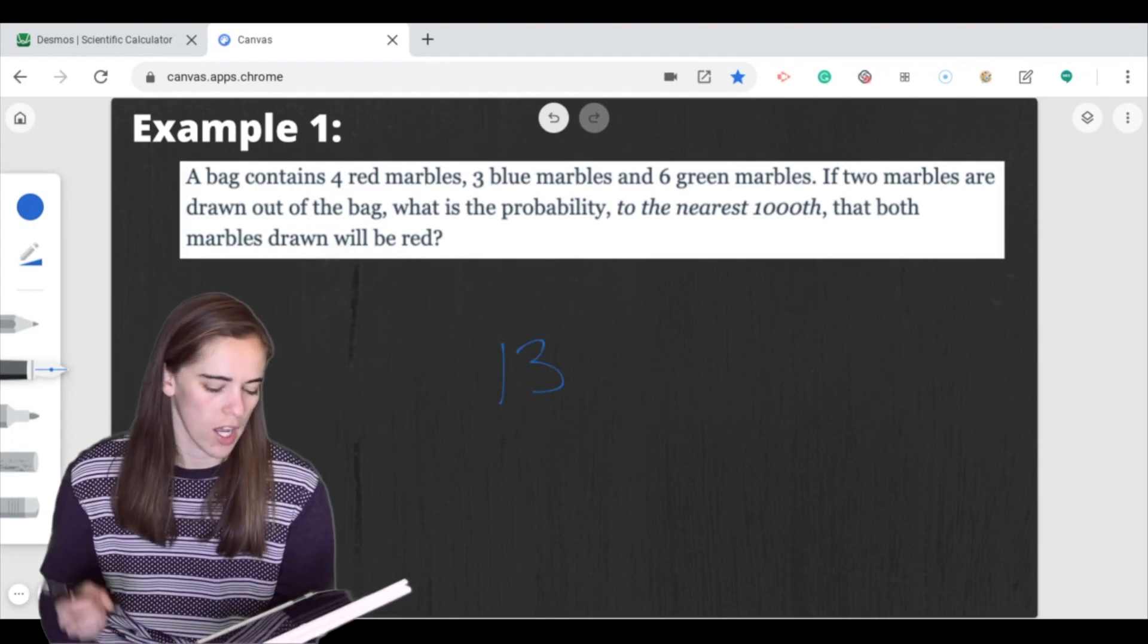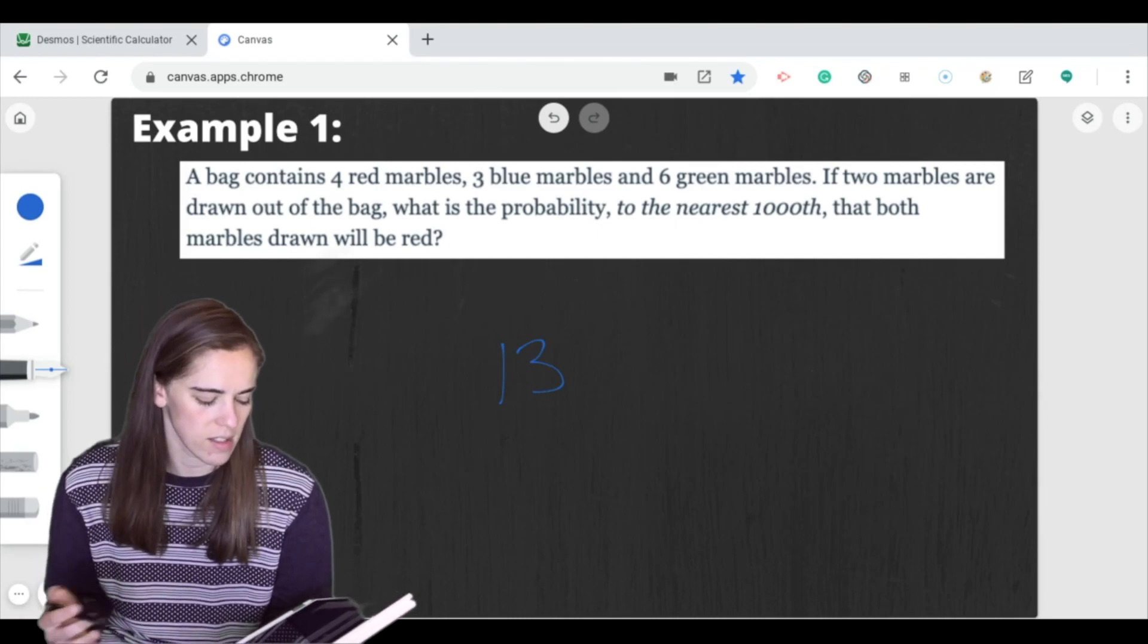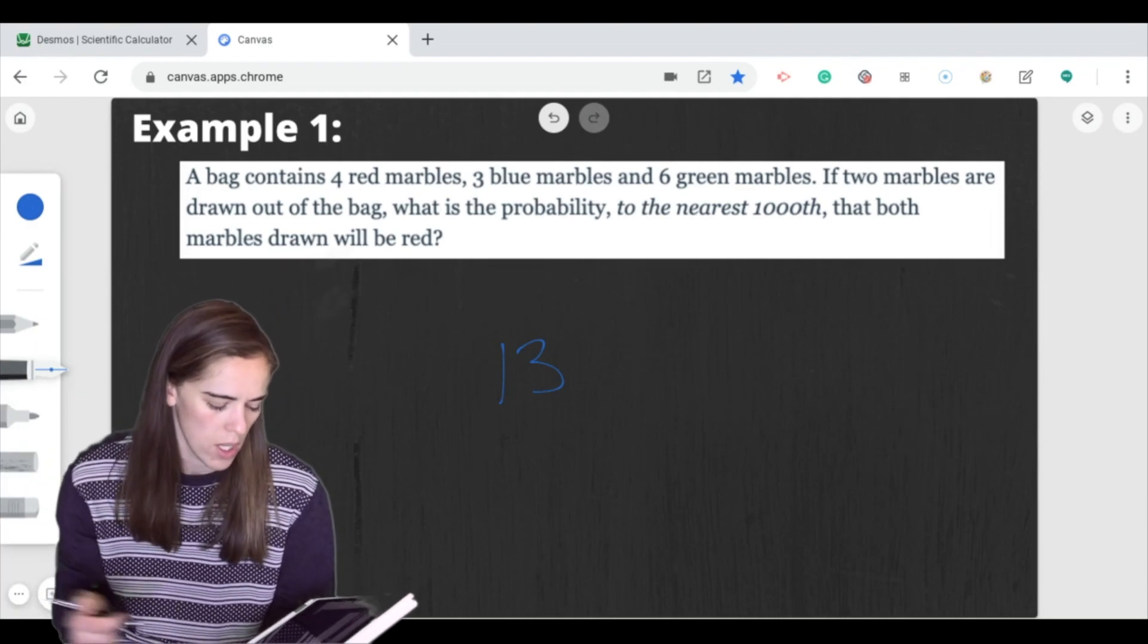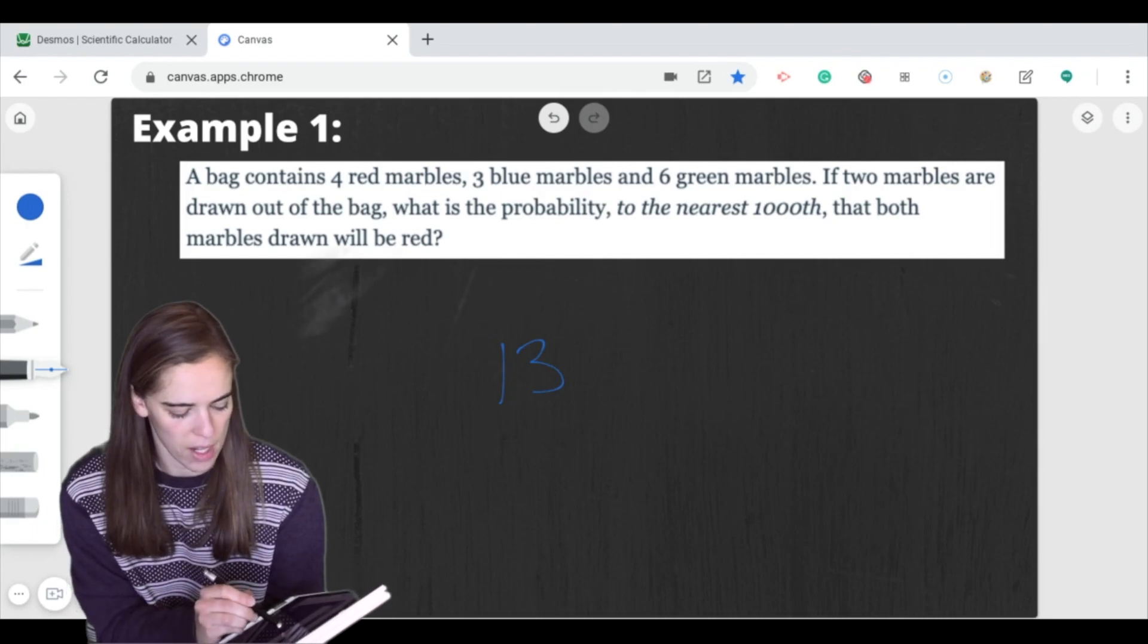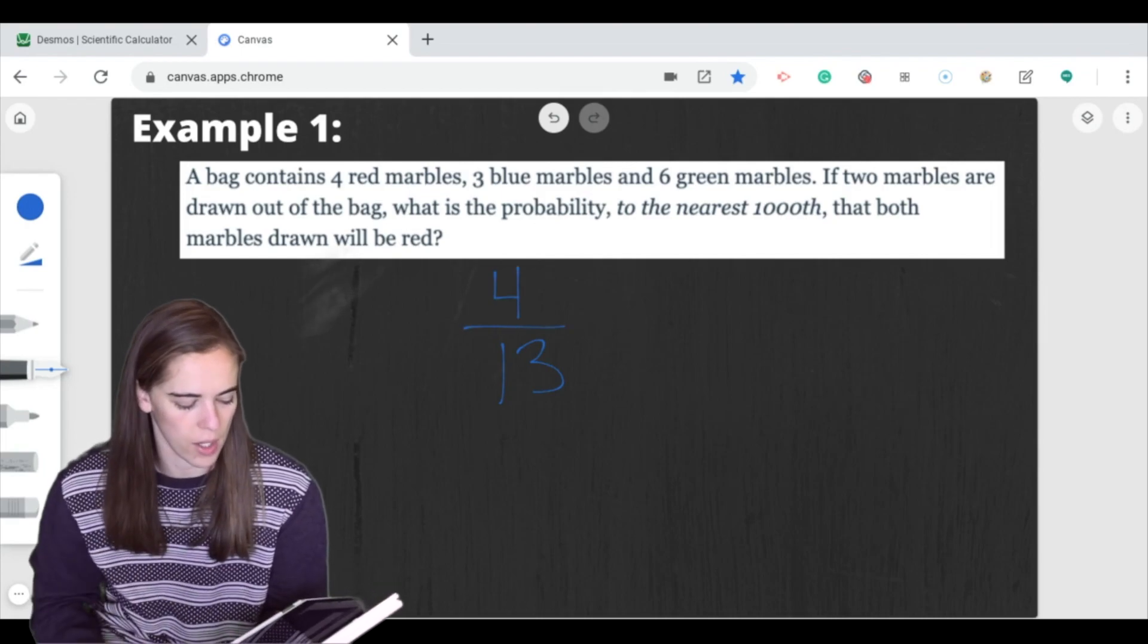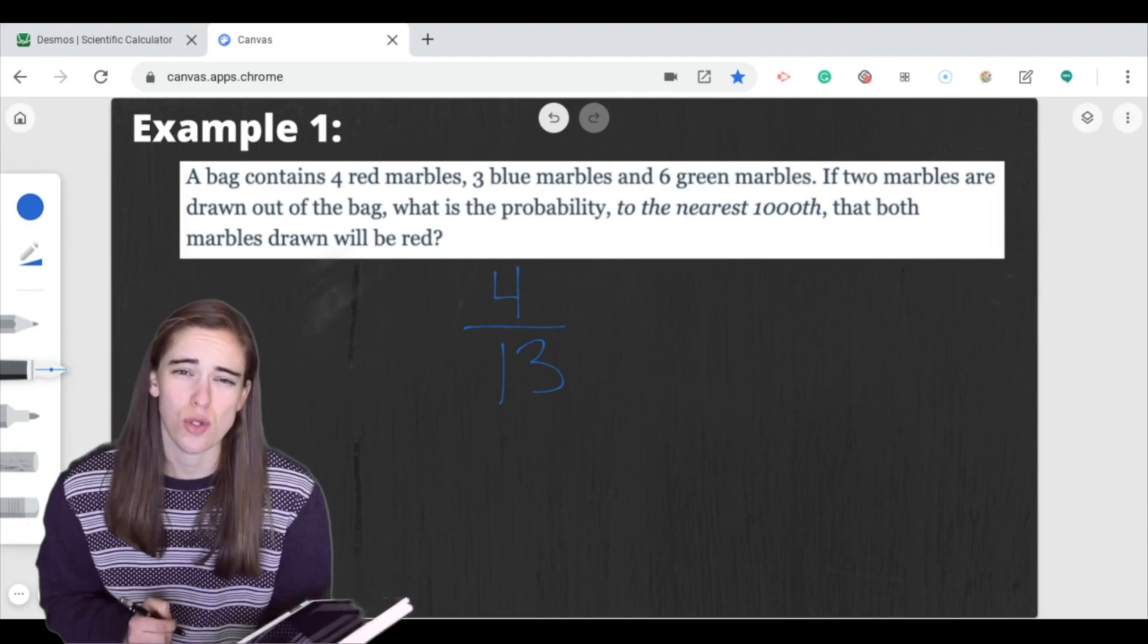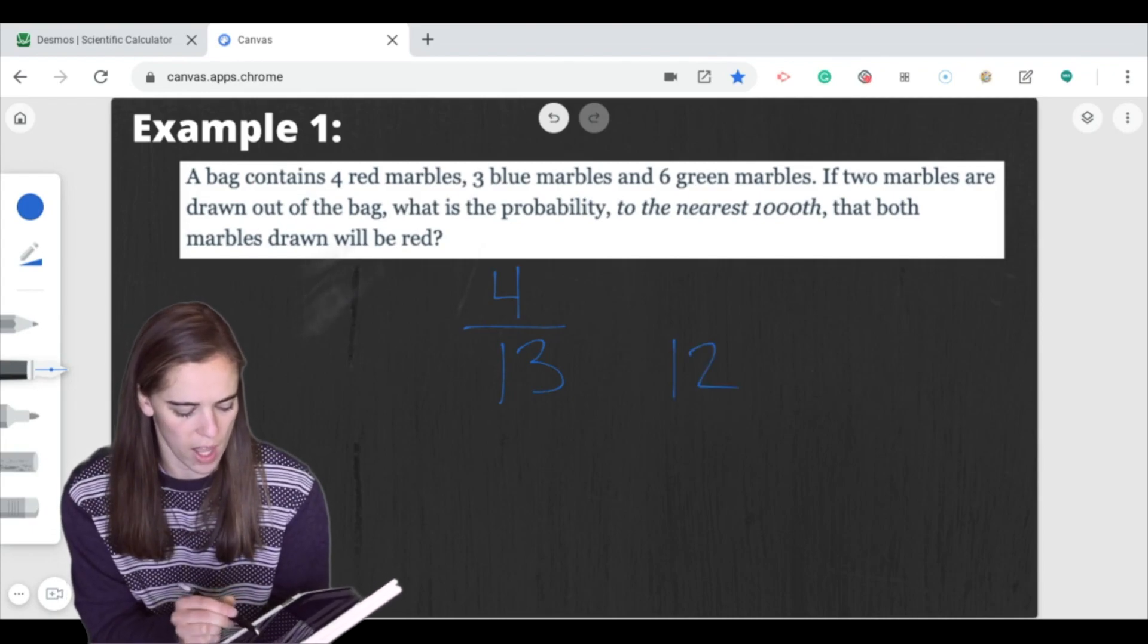And we're trying to find the probability of drawing two red marbles in a row. So this one, it doesn't say that we're replacing it at all. So we're imagining I'm drawing one marble. I know there are 13 possible outcomes. Right now there are four that are red. So that means the probability of drawing a red to start is four out of 13. Now I'm going to draw another marble. Well, if I already drew one marble out, there are no longer 13 marbles. There are only 12 marbles left.